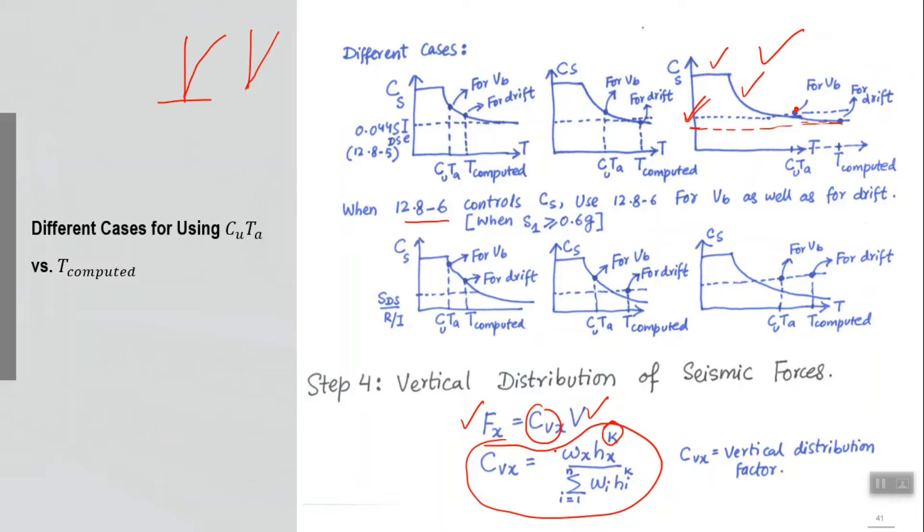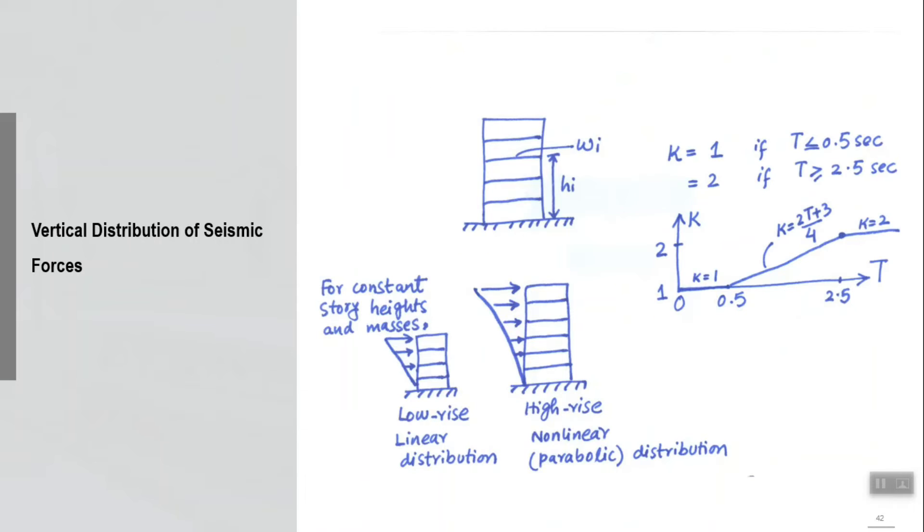If k is 1, this expression is simply linear, which is simply telling us that we should distribute in an inverted triangular manner if the story masses and story heights are constant. If all w_i from i=1 to n is a constant value and if all h_i are constant values, in that case we will be simply getting an inverted triangular distribution. But if k is 2, we will be getting a distribution like this, it will be parabolic.